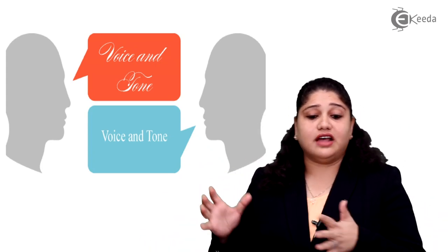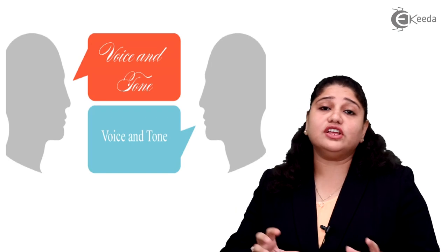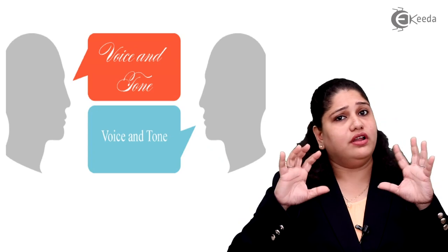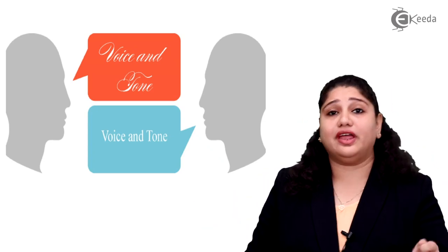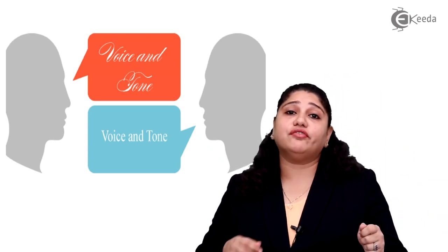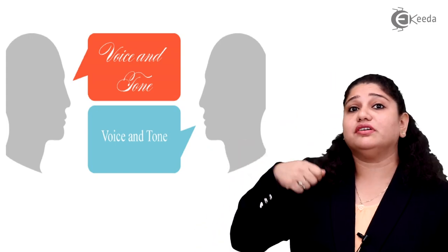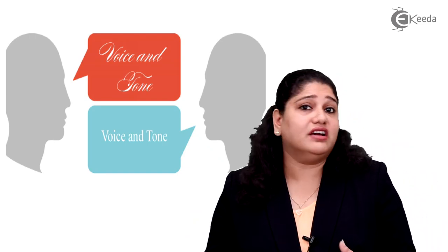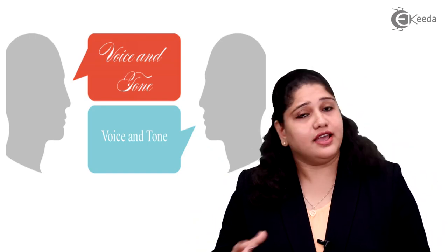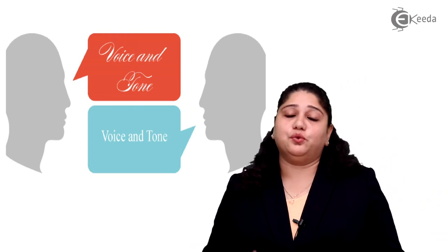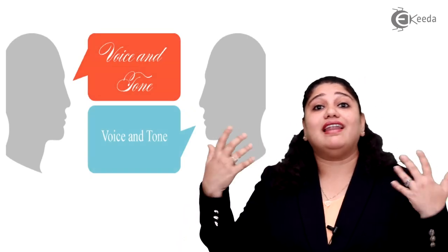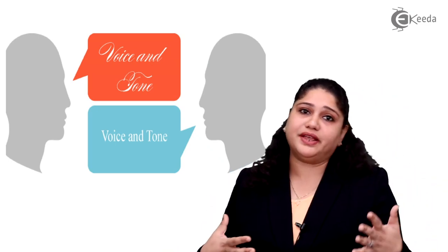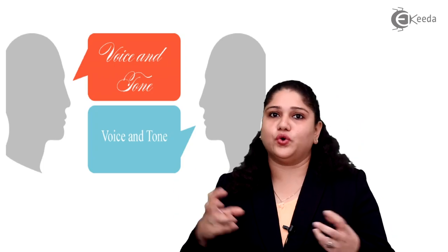The sixth aspect is articulation — the clarity of your voice. No matter how fast or slow or monotone it is, it has to be very clear. The clarity of voice is very important. Suppose I've prepared a big lecture and I'm sure it would work — but if it's not clear and I can't convey it clearly, that's a problem. This is the sixth and most important aspect of paralinguistics.